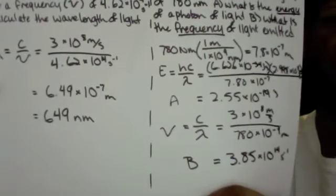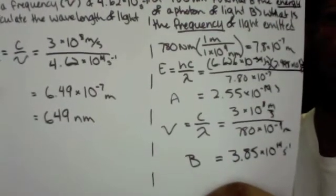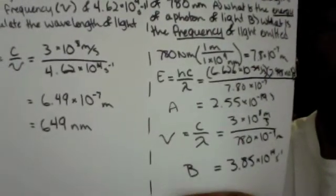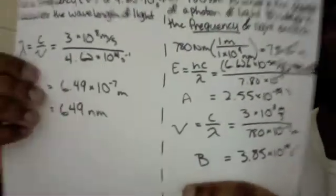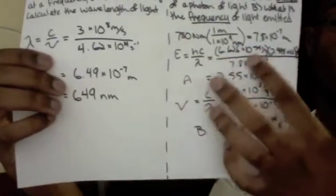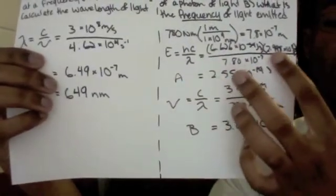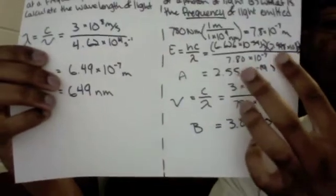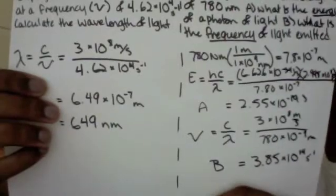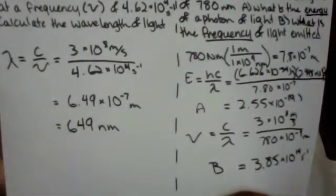So energy of a photon, we said was going to be Planck's constant times the speed of light over wavelength. Over here we have Planck's constant times the speed of light divided by the wavelength that was given. That's going to come out to be 2.55 times 10 to the negative 19th joules. That's part A.